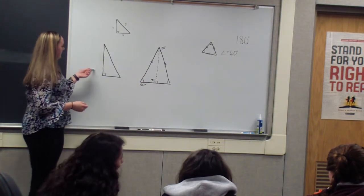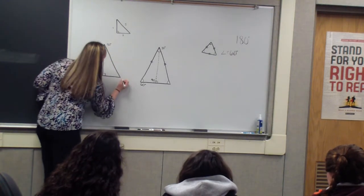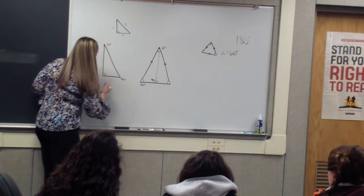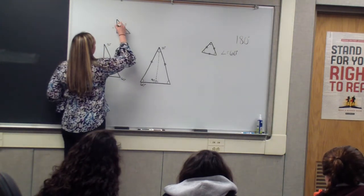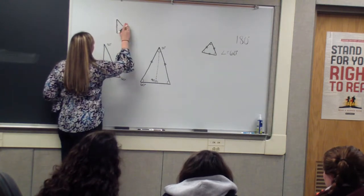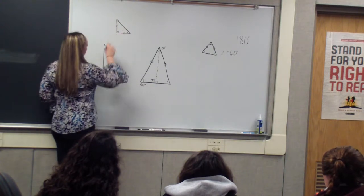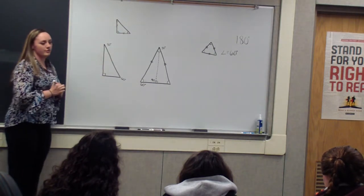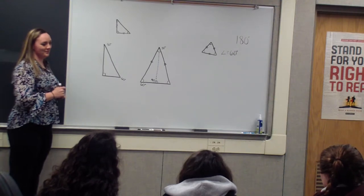Okay. It'll be the same thing for the right triangle, so if this one was 30, this one would also be 60. So now if we use this one, and this side is equal to this side, that means both of these angles would be the same. So if we have one 90 degree angle, what are the other two? Kelsey? Forty-five.